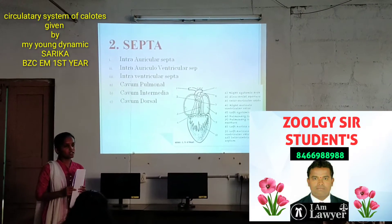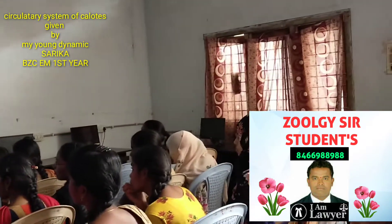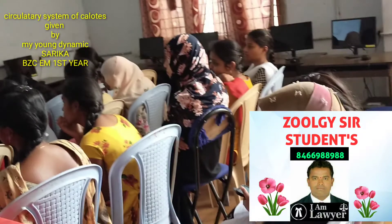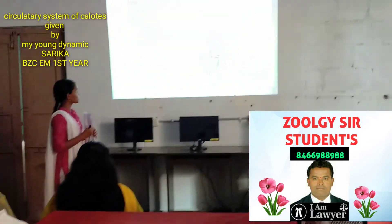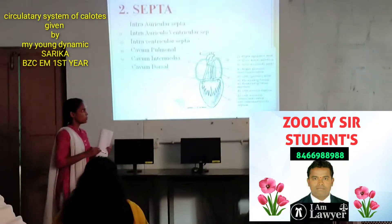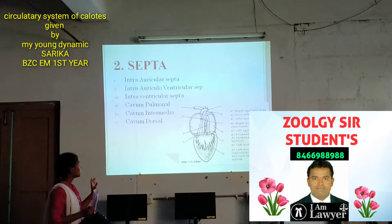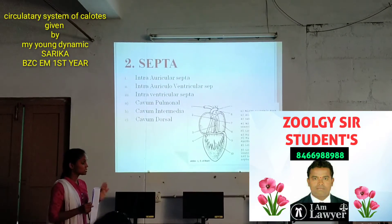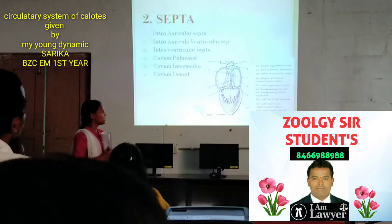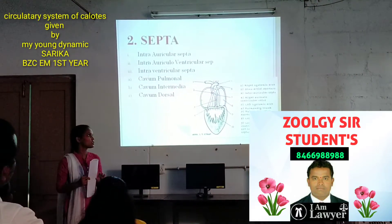In the ventricles, they are fully and completely divided. There are three parts in the ventricles: K1 pulmonary, K1 intermediate, and K1 dorsal. K1 pulmonary arises from the pulmonary arch and K1 dorsal arises from the left side of the systemic arch. K1 intermediate functions to prevent mixing of oxygenated and deoxygenated blood.